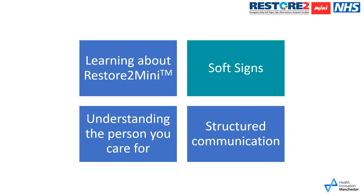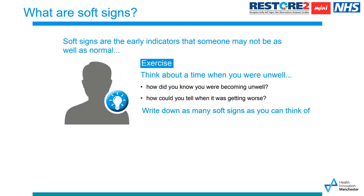In this part of the presentation we'll be learning more about soft signs. Soft signs are the early indicators that someone may not be as well as normal. We've all experienced this — think about a time when you were last unwell. How did you know you were becoming unwell? How could you tell when it was getting worse? Did you feel more tired than usual, or perhaps sick or hot?